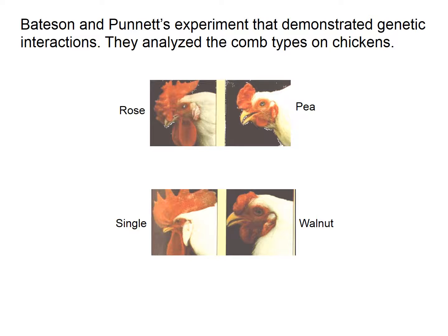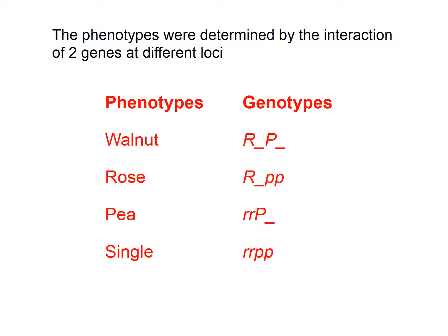The alleles that result in these different shaped chicken combs are as follows. The presence of genes at different loci results in these genotypes. For walnut, you need to have at least one dominant R and one dominant P. For rose, if you're homozygous recessive for P and you've got the dominant R, you'll get rose. To have a P-shaped comb, you just need one dominant allele for P. And if you're homozygous recessive for both genes at these different loci, you'll get the single-shaped comb.